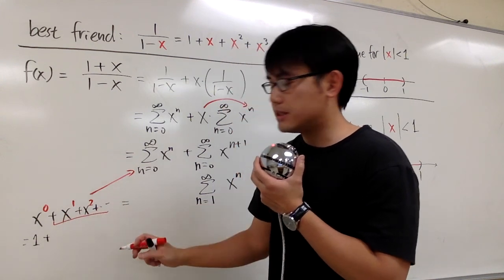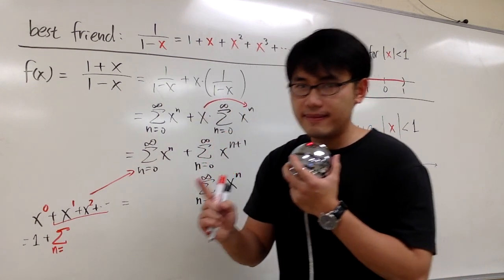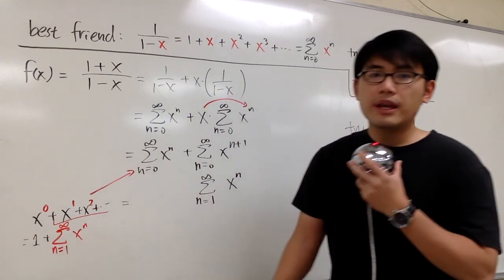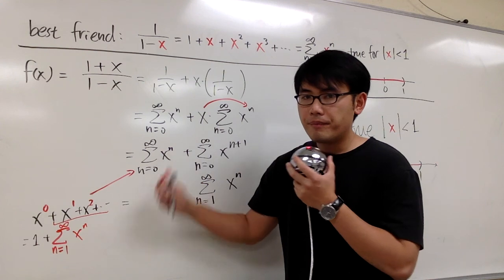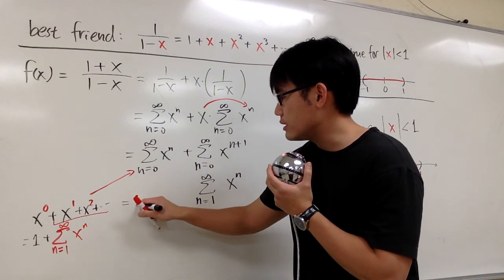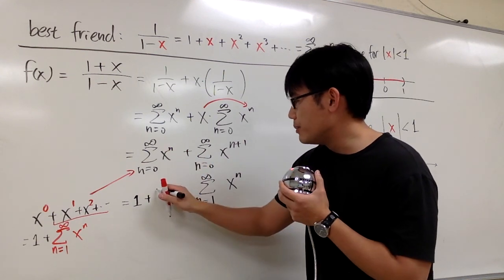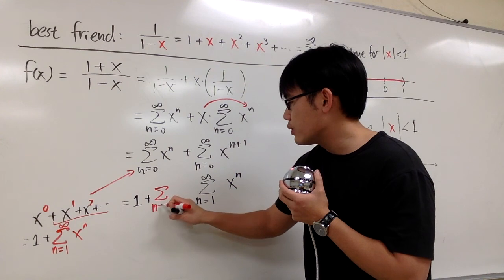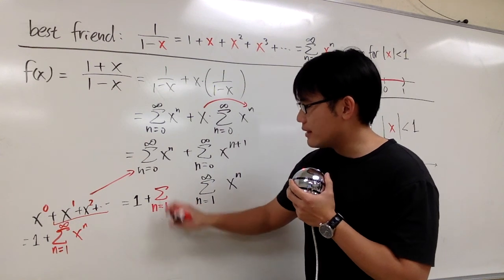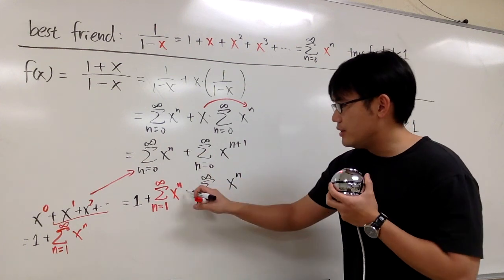If we pay attention to all these terms, we can write the remaining part — after pulling out the n=0 term — as sigma when n goes from 1 to infinity, x to the n power. So the first sigma equals 1 plus sigma when n goes from 1 to infinity, x to the n. The idea is: plug the first term n=0 to get 1, and the remainder stays in sigma form starting from n=1.